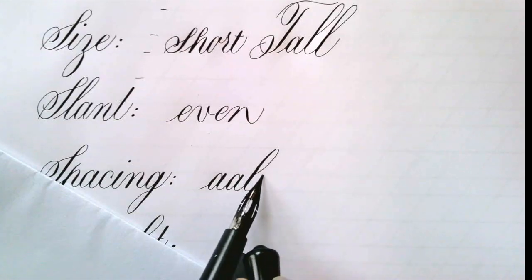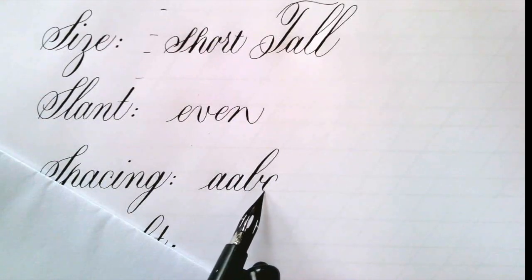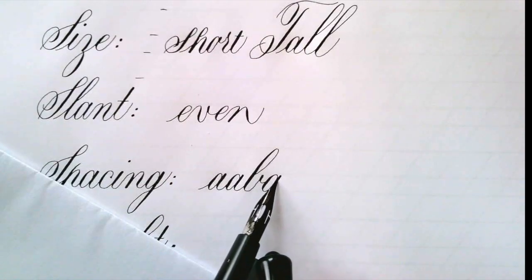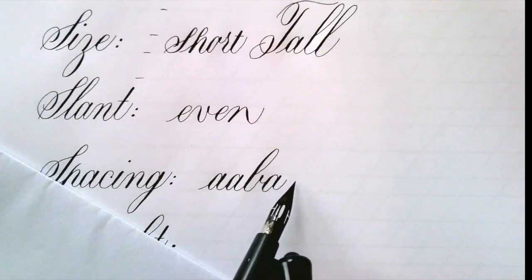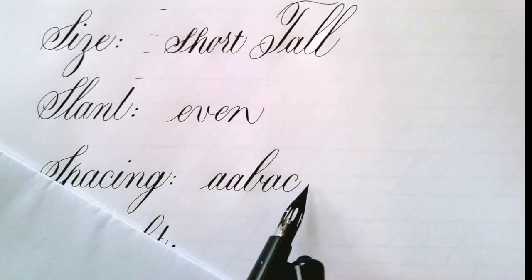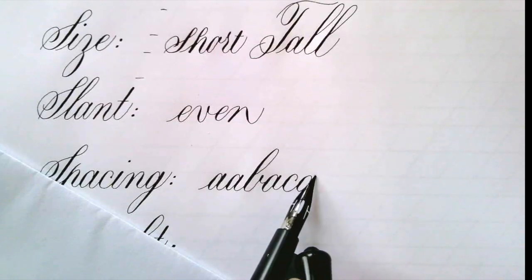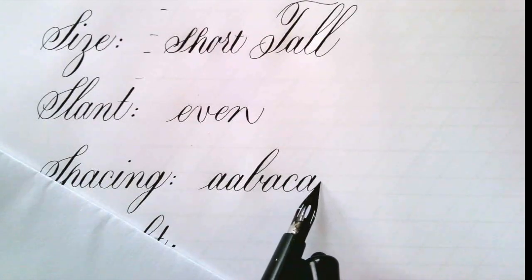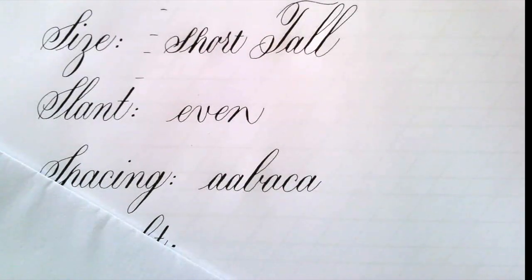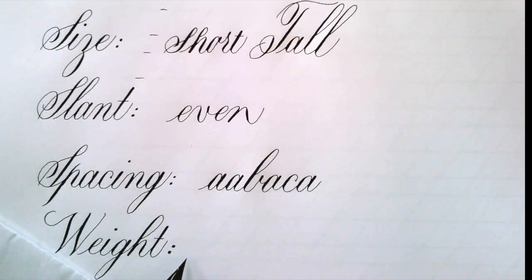A necklace is where you choose one letter and you write it in combination with all the other letters. Here I'm giving you the first few letters of an example of an A necklace. I'm combining the letter A with all the other letters: with the B, with the C, with the D, with the E, etc. You can do this for an M, you can do it for an O. Necklaces help you figure out spacing.